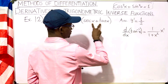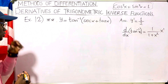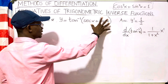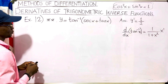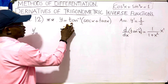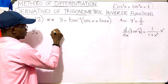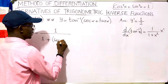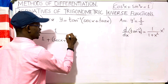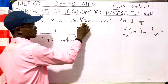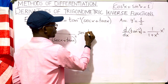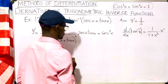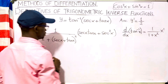Secant x plus tangent x represents the angle x. We can rewrite or simplify secant and tangent first, but let's go straight and solve the problem. So y prime equals — the derivative of tangent inverse of an angle is 1 over 1 plus that angle, which is secant of x plus tangent of x, squared, times the derivative of that angle. The derivative of secant x is secant x tangent x, and the derivative of tangent x is secant squared x.